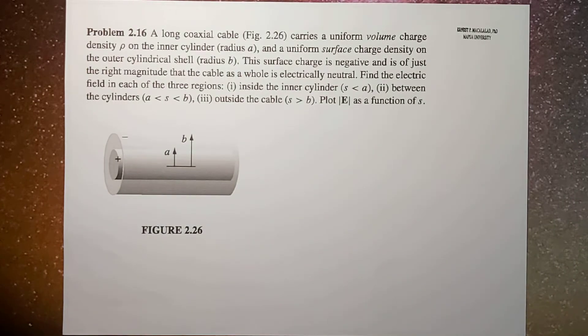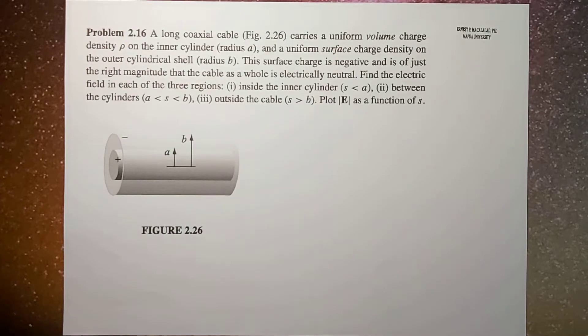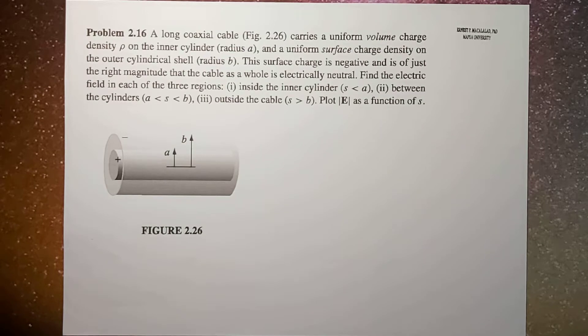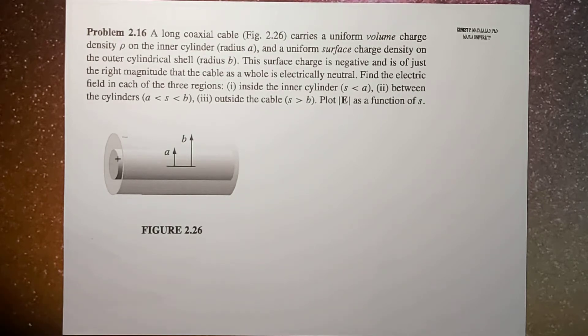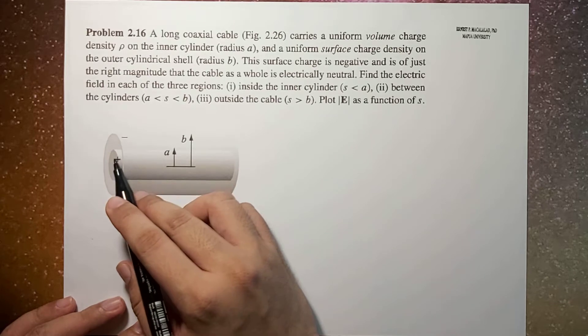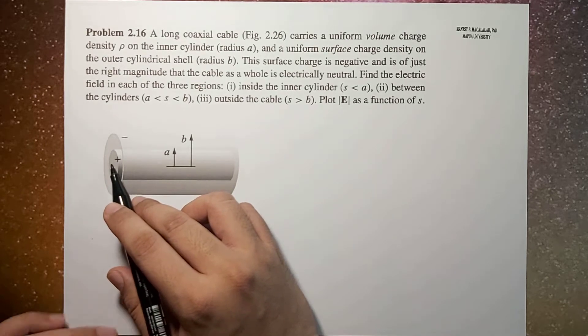So you will notice here that we have two objects that compose the coaxial cable. By the way, this coaxial cable has the same configuration as your usual coaxial cable used in your antennas or cable TV. At the center we have a solid cylinder, so that means it carries a volume charge density ρ, and there's a cylindrical shell on the outside. The whole cable is electrically neutral with the surface negative and the inner positive.